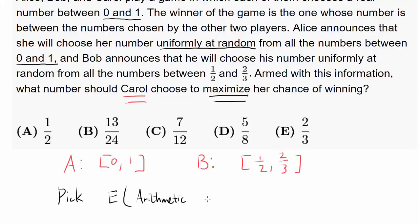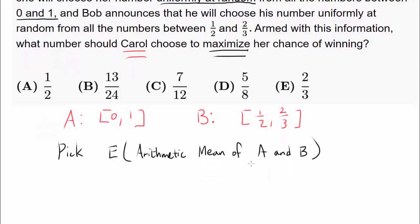Because arithmetic mean is right between the two numbers. We are looking at the midpoint and the midpoint can be found using arithmetic mean. So how can we think about this? Well, let's say A is the number that Alice picks and B is the number that Bob picks. So we know this is the expected value of A plus B over 2. That's how you find arithmetic mean.